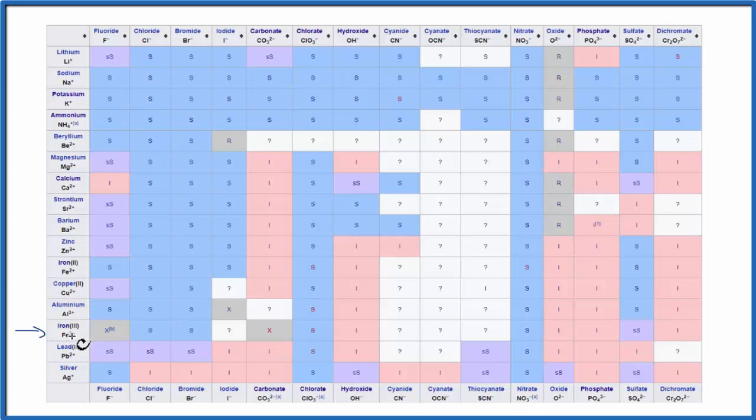We'll go over until we hit the hydroxide, which is right here. So if we go down here and iron 3, we come over, and we see it says I, and I means insoluble. So it's actually not going to dissolve.